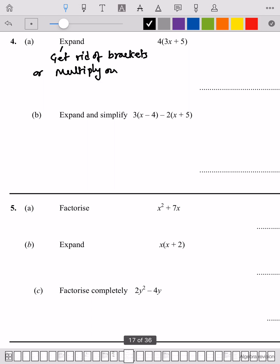So let's multiply 4 times 3x. 4 times 3 is 12x, plus 4 times 5 is 20. That's your answer: 12x plus 20. Now we got expand and simplify. Same technique, but we'll do it in steps.